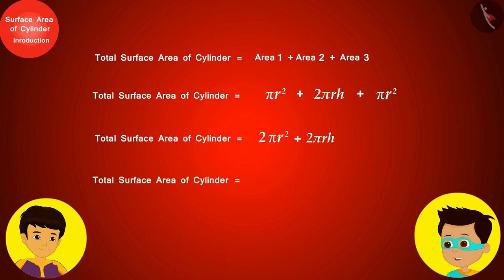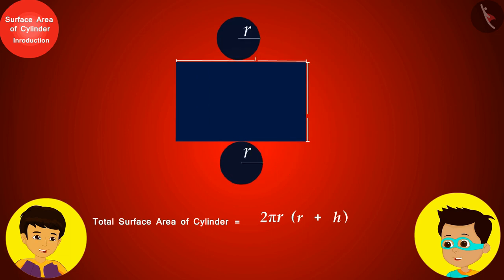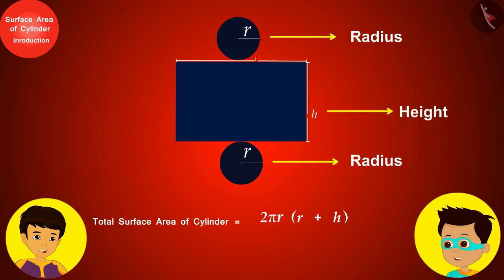We have found the formula for the total surface area of the cylinder as the sum: 2πr(r + h), where r is the radius of the top and bottom circles of the cylinder and h is the height of the cylinder.